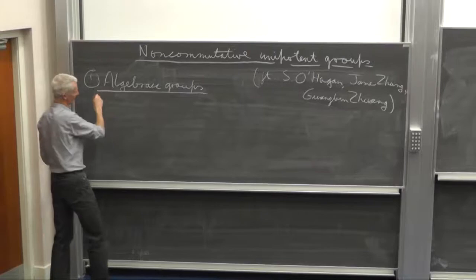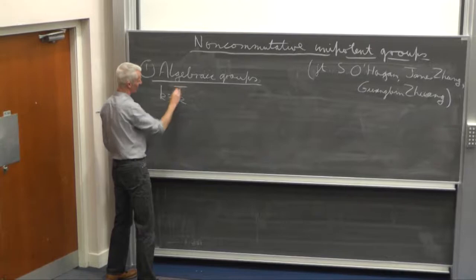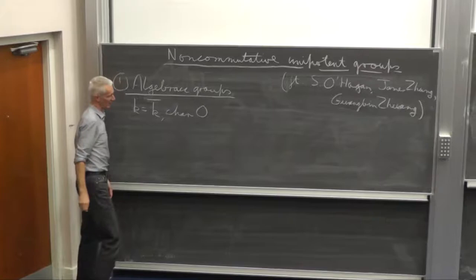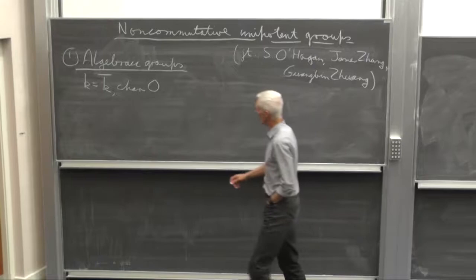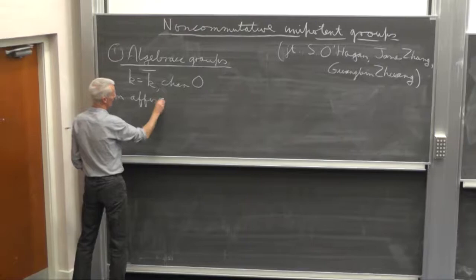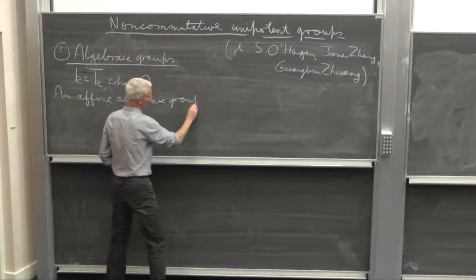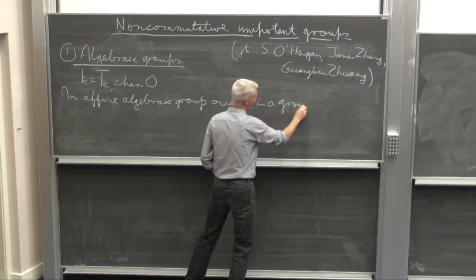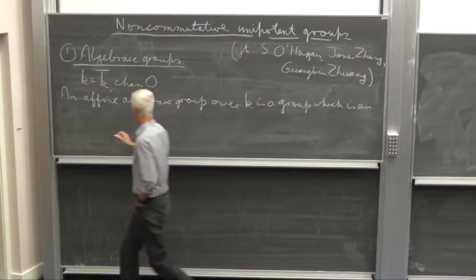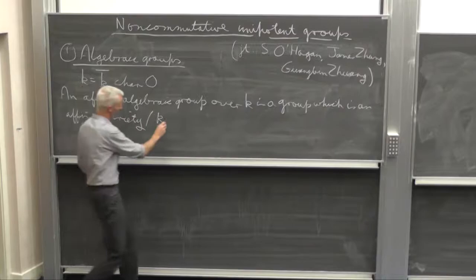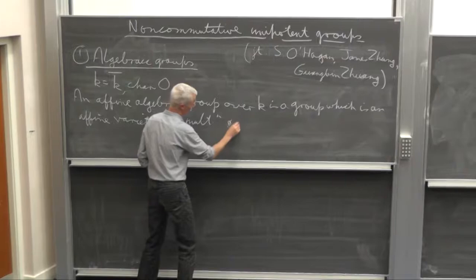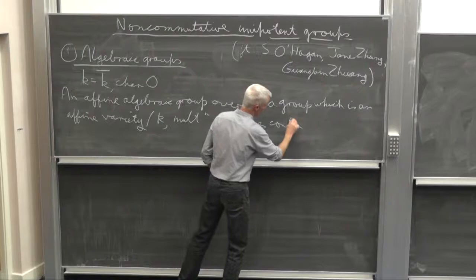First of all, algebraic groups, because that's the setting we're in. In particular, we're in characteristic zero. So everywhere throughout K will be an algebraic closed field of characteristic zero, and everything goes wrong, more or less, if you drop those hypotheses on the field.